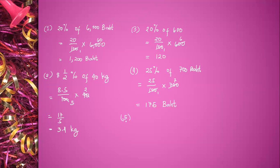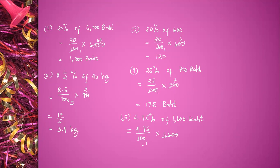Number five: 4.75% of 1,600 baht is equal to 4.75 divided by 100 times 1,600 baht. 1,600 divided by 100 is equal to 16. 16 times 4.75 is equal to 76 baht.